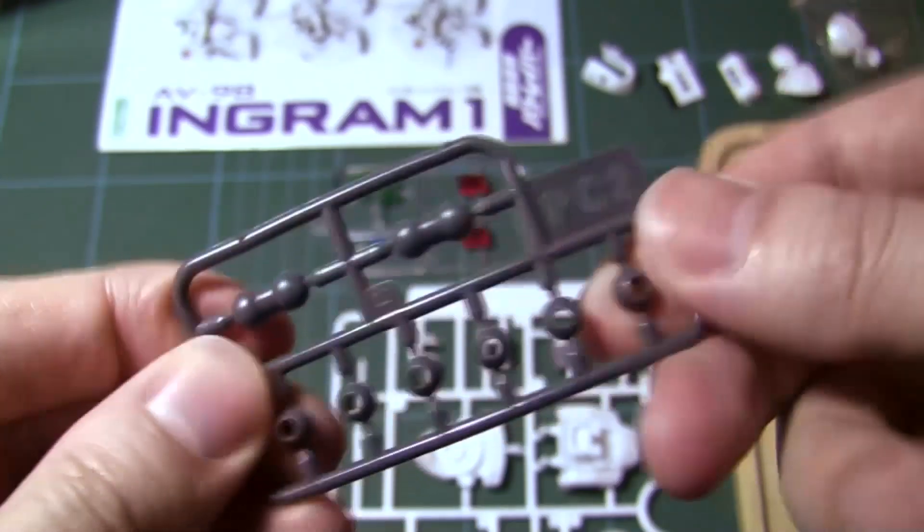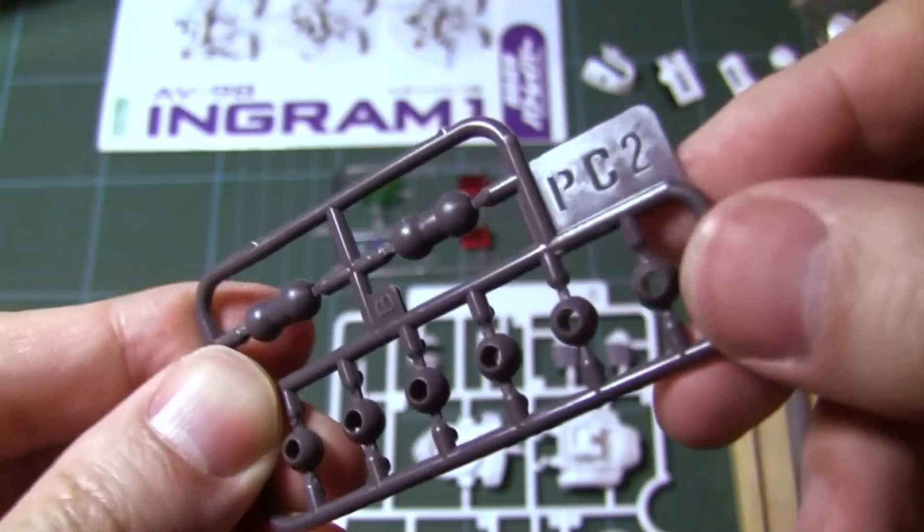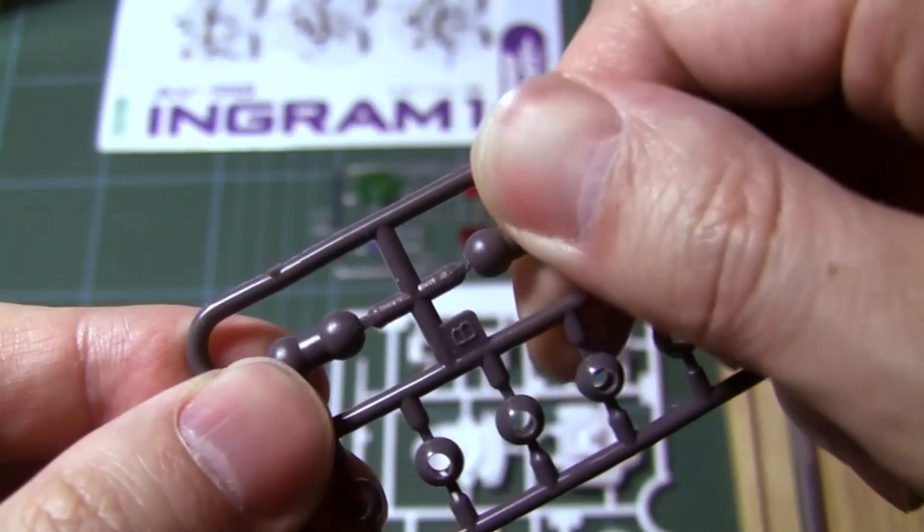The polyurethane polycaps, as they're commonly referred to, I usually just twist them off.